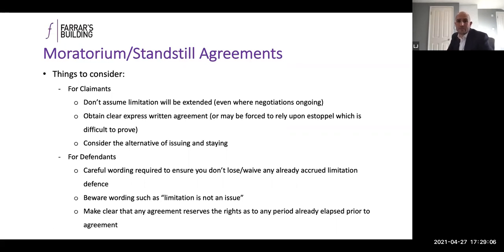Practice points for claimants: do not assume limitation will be extended by a defendant even where negotiations are ongoing — you approach the end of limitation at your peril. Obtain clear express written agreements, otherwise you'll be forced to rely on estoppel, which is very difficult to prove. Consider your alternative: issuing and then asking the court to stay proceedings. For defendants: you can agree to standstill agreements even if a limitation defence has already accrued, but be very careful about the wording — ensure you don't waive any already accrued limitation defence. Do not use wording such as 'limitation is not an issue' as you could be deemed to have waived that defence, and make clear in any agreement that you're reserving all rights in respect of limitation for any period already elapsed.